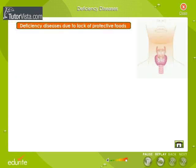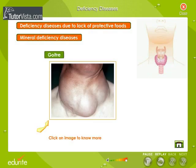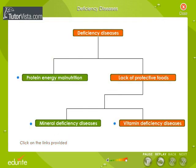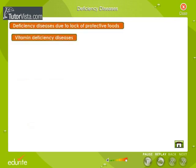Deficiency diseases due to lack of protective foods — minerals and vitamins protect us from diseases. Deficiency of any of the vitamins or minerals causes deficiency diseases. Vitamin deficiency diseases.